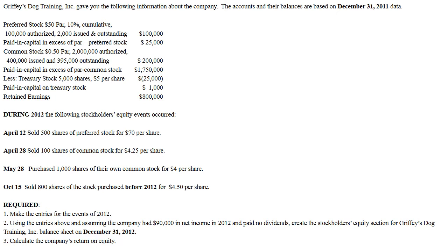Here are basically all the company's balances in the upper left-hand side of their equity accounts and some details about it. You can see the preferred stock has a $50 par, the number that's authorized, the number that's issued and outstanding. Then you've got the APIC underneath it, the common stock and common stock's APIC, Treasury stock and Treasury stock's APIC, and retained earnings at the bottom, which we'll work with as we go.